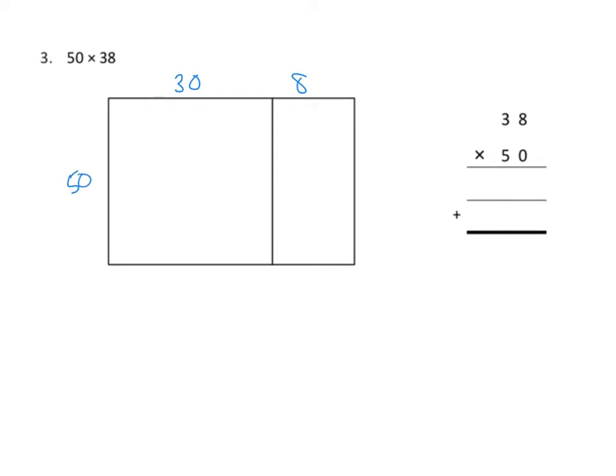When we multiply in the area model, this is going to be pretty easy. We're going to have 50 times 30. Another way of saying that is that we have 5 tens times 3 tens. When we multiply 5 tens times 3 tens, we know we're going to get 15 of something. Tens times 10, so 10 times 10 is 100, so I think we're going to end up with 1,500.